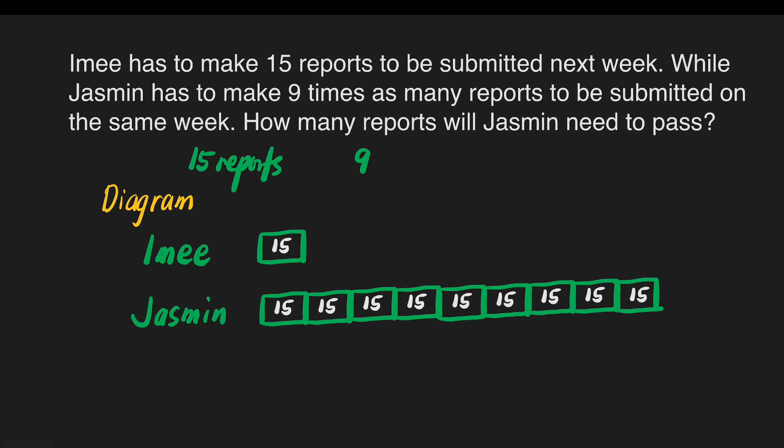To find how many reports Hasmin needs to pass, we could add all the 15s together, but we can also just simply multiply. We have 15 reports per box, and we will multiply 15 times 9.